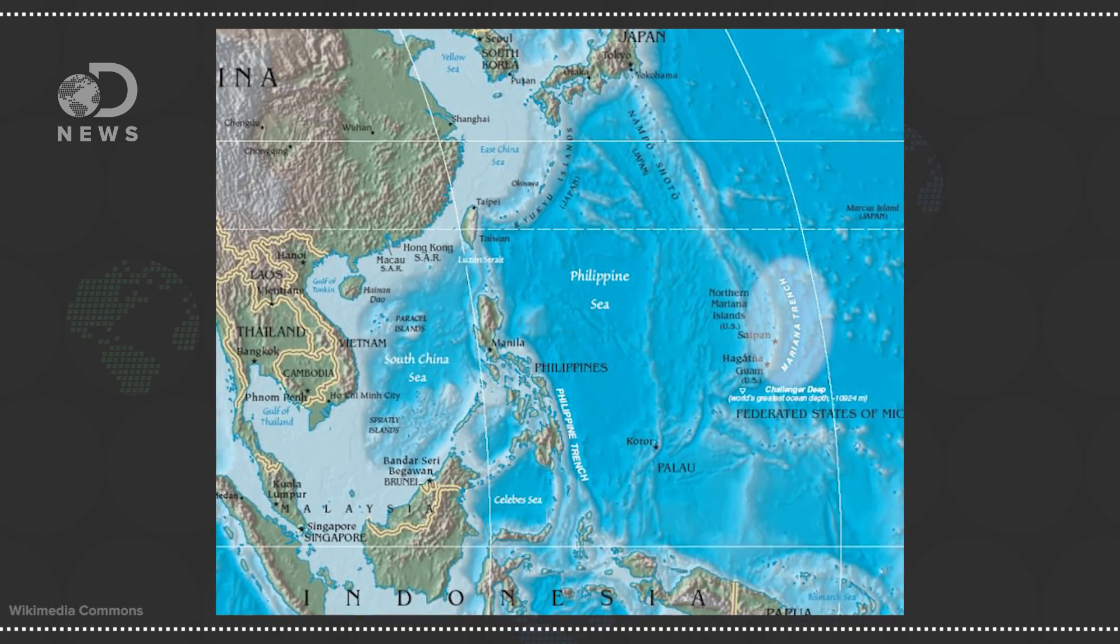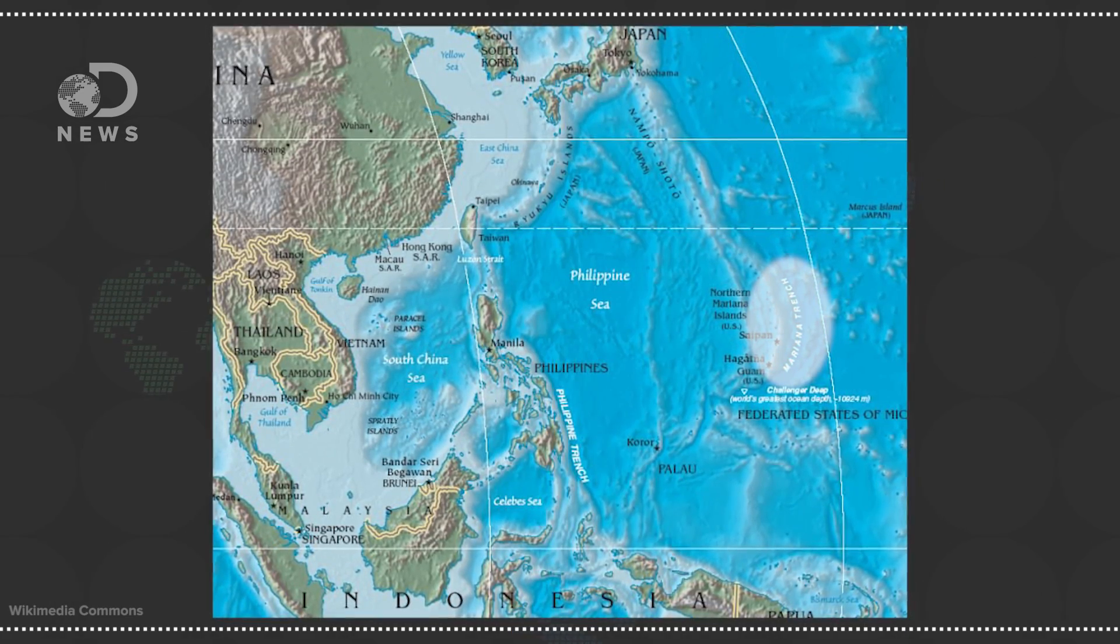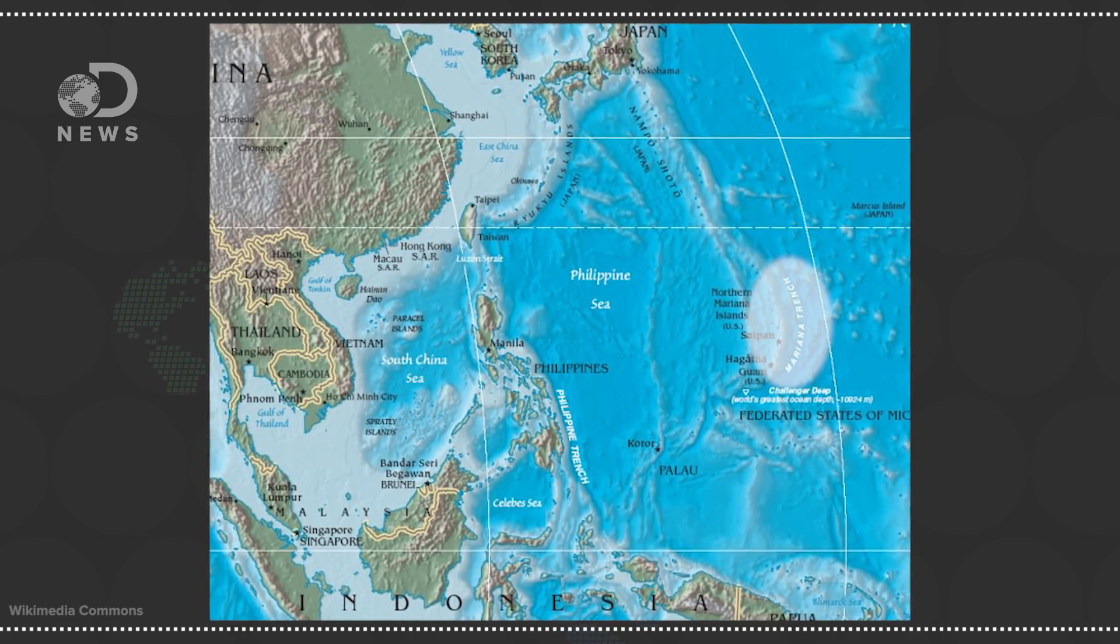Hey there pollutant population, Jules here for DNews. The Mariana Trench is the deepest known part of the ocean, stretching down roughly 36,000 feet. You'd imagine that at those depths, the ocean floor is pristine, almost untouched by human activity. Well, I've got some bad news for you. Turns out, the bottom of the ocean is very, VERY polluted.